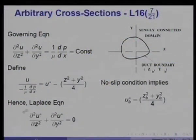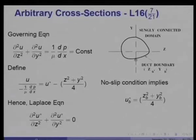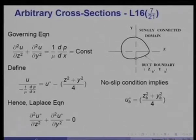We seek a general method applicable to absolutely arbitrary cross sections, of which a triangle, ellipse, or circular duct would be special cases. Consider a duct of arbitrary cross section where the boundary coordinates (zb, yb) are known and flow is in the x-direction. The only requirement is that the domain must be singly connected — meaning one can trace the boundary continuously and return to the starting point without lifting the pen.